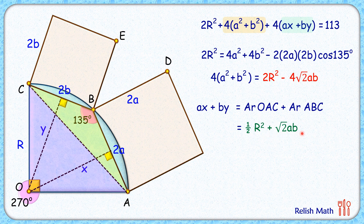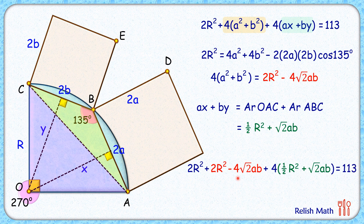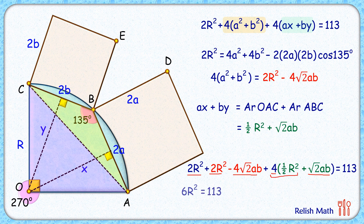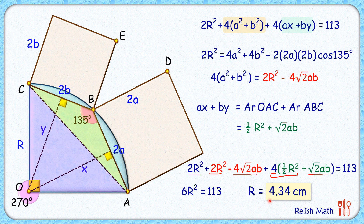Substituting both values into the original combined equation, when we open the brackets we get −4√2·ab and +4√2·ab, which cancel. We are left with 2r² + 2r² + 2r² = 113, giving 6r² = 113, so r² = 113/6, and r ≈ 4.34 centimeters. That's our answer. The solution was slightly lengthy and I'm looking forward to improvements. See you in the next video — bye bye!